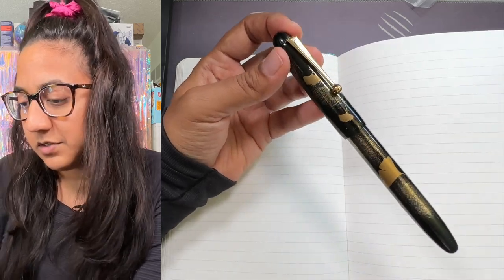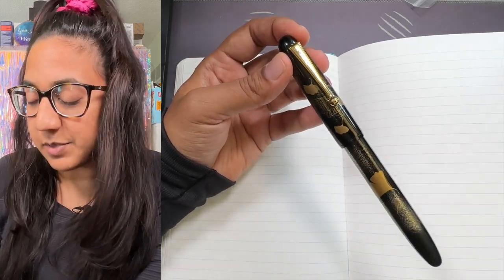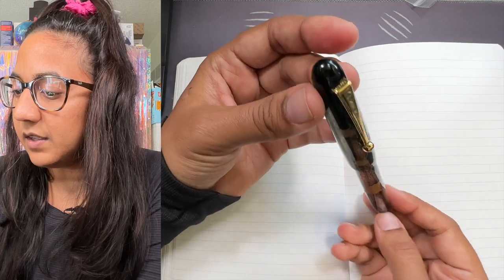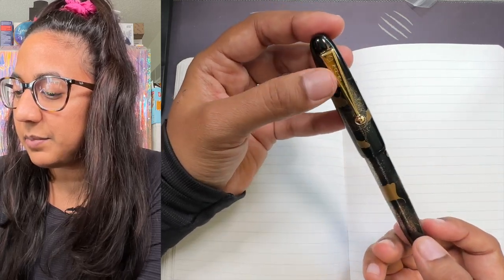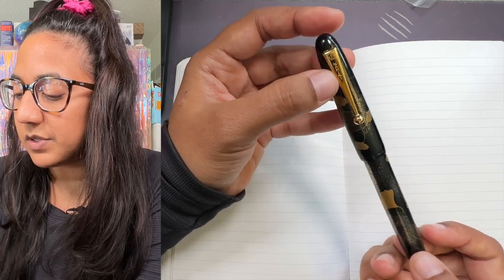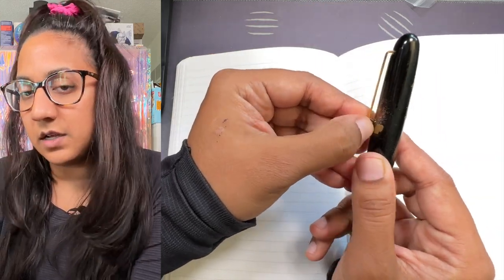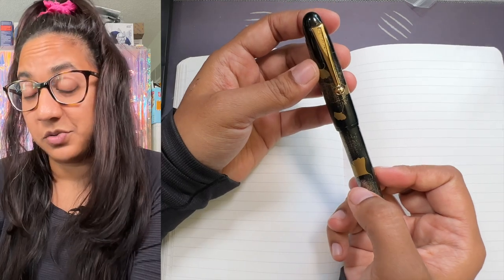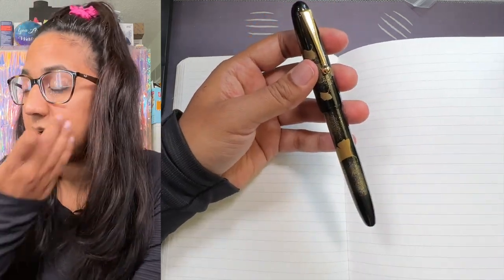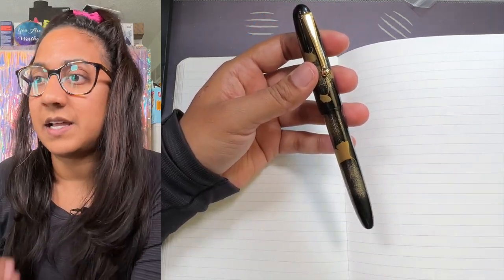I always enjoy purchasing from Pen Chalet. Let me go over the details of it. The clip has Namiki engraved on it as well as the logo, a round ball at the end. It is a snug clip. I am very gentle with this pen. I have another Yukari, I had the moonlight but I had to sell it.